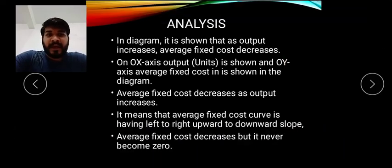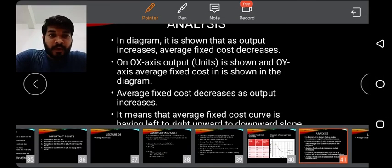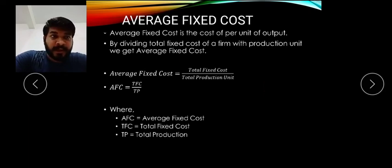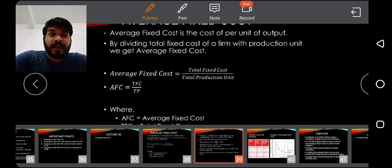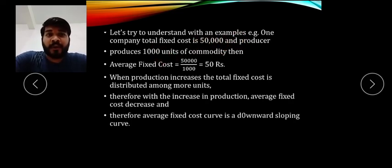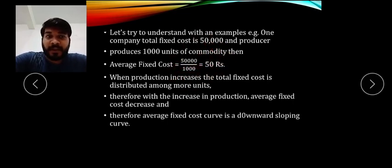This is a simple concept. If there is any doubt you can call or message. Remember the formula: total fixed cost divided by total production is average fixed cost, or AFC = TFC / TP — it measures per unit per output fixed cost. Recap: one company has total fixed cost of 50,000 rupees; 1,000 units of marker are produced; so 50,000 divided by 1,000 gives 50 rupees per unit fixed cost.